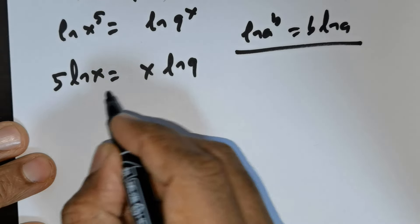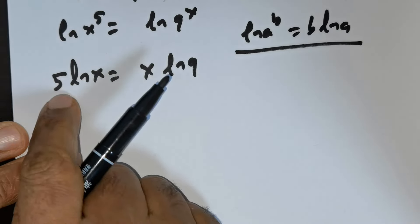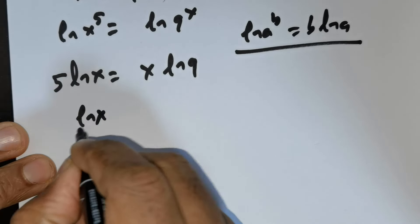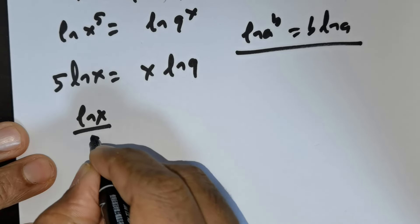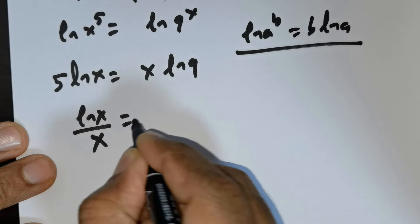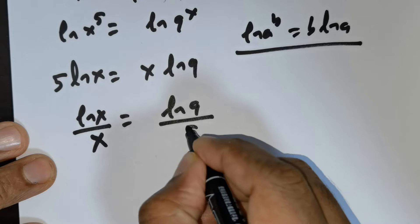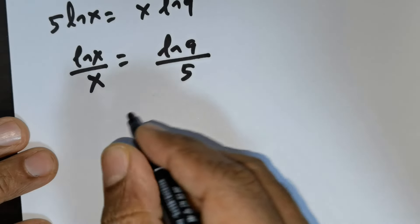Now I would like to bring 5 down and x in this fashion. So this is going to be ln x over x is equal to ln 9 divided by 5.